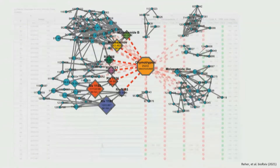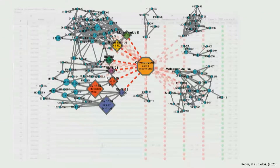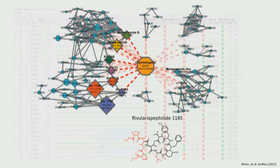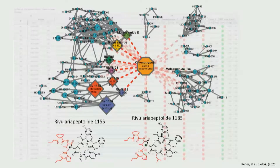The gray lines are all the similar molecules clustered together by their MS/MS similarity. There is a nice family of them, some of which were known. We also found one particular new family, which we called the rivularia peptolides. Thanks to the work of my colleague Rafael, he purified some of them and could get the planar structures solved by NMR.